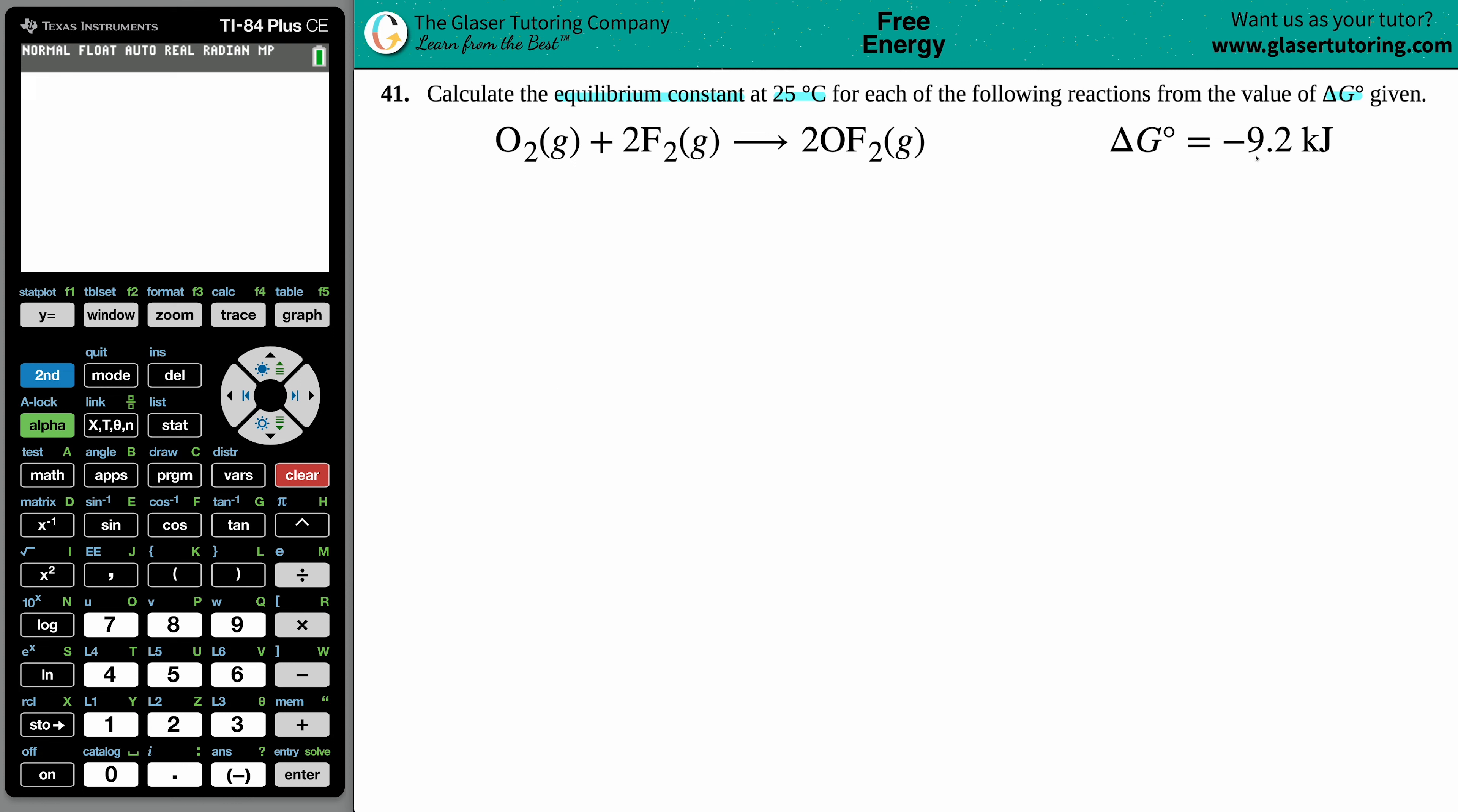So it's a spontaneous reaction, but we want to find out that equilibrium constant. Remember, the equilibrium constant is a K value. Now when you're trying to solve for a K value and they give you a delta G, there's basically only one formula that you can use. There's two different variations depending on what you're solving for.